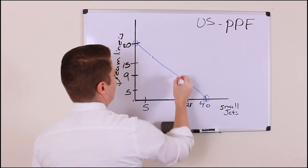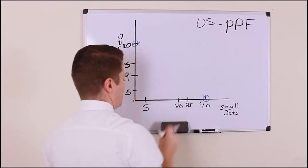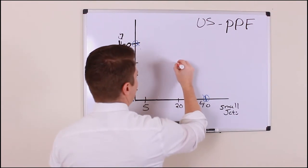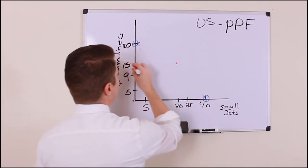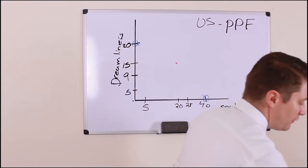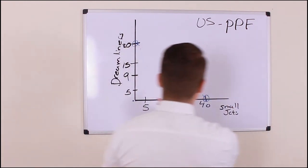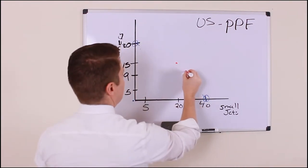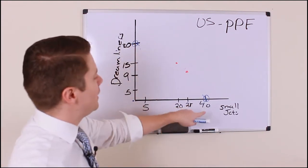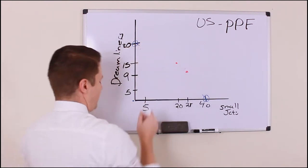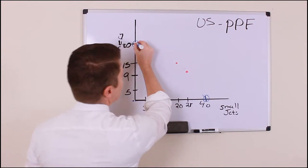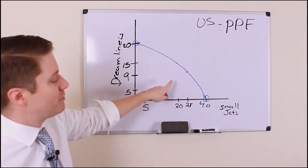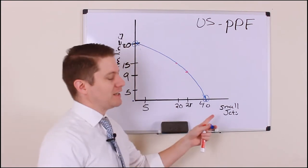If I produce 15 dreamliners, I can only produce about 20 small jets. And if I go to 9 dreamliners, I can produce 28 small jets — giving up quite a lot, roughly three-quarters of the change. Taking the production possibility curve from the extremes through these intermediate points gives a curve that's actually truer to reality, since most countries don't have straight lines.